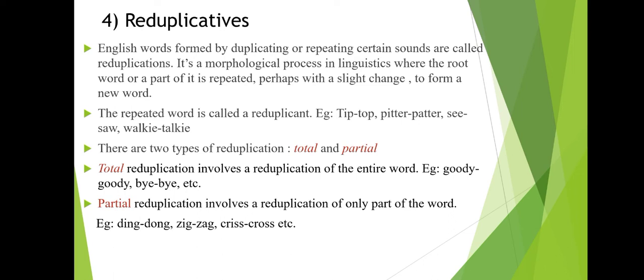Reduplication contains two types: total and partial. Total reduplication means the entire word is duplicated — for example, 'goody-goody', 'bye-bye'. Partial reduplication involves reduplication of only one part of the word — for example, 'ding-dong', 'zig-zag', 'criss-cross'. In 'ding-dong', only part of the sound changes. In zig-zag and criss-cross, one part of the word is reduplicated with a slight difference. That is partial reduplication.